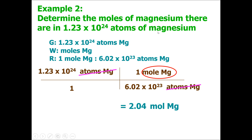As a reminder with dimensional analysis: any values in the numerator should be multiplied together, and any values in the denominator should be divided. In this one-step problem, I said 1.23 × 10²⁴ divided by 6.02 × 10²³ — because when you multiply or divide by values of 1, it doesn't numerically change your answer, so you can skip that to save time.